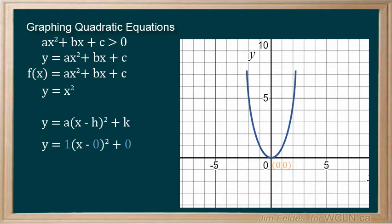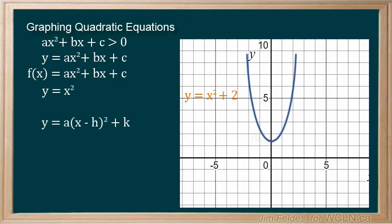So our vertex is the point and a is 1. But as k increases, the graph moves, or translates up, by plus 2 in this equation.